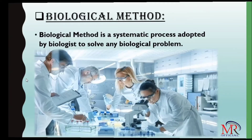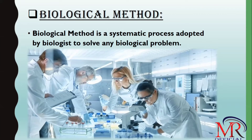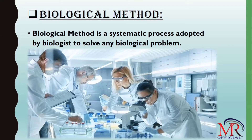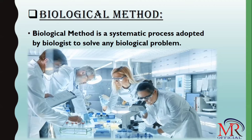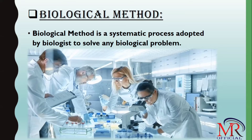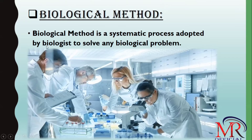Now, what is the biological method? Biological method is the way to solve any biological problem. For example, we have the biological problem of corona nowadays, and scientists are using different ways and methods to solve this problem — how to control coronavirus, how to control polio virus, how to control malaria. These different ways adopted by scientists are known as the biological method.